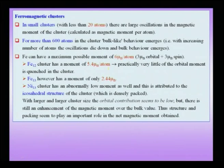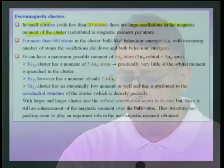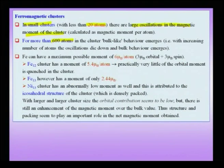When talking about ferromagnetic clusters, the small cluster regime has about fewer than 20 atoms, and here there are large oscillations in the magnetic moment per atom. We already noted that when you decrease the size of the system, the magnetic moment increases above the bulk value. With more than about 600 atoms, bulk-like behavior emerges: the oscillations in the magnetic moment per atom die down, and sharp variations with atom number disappear.